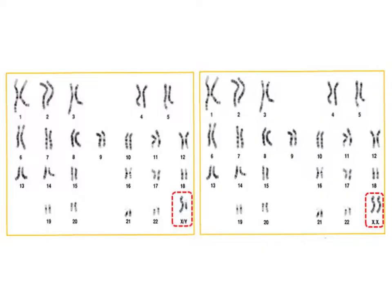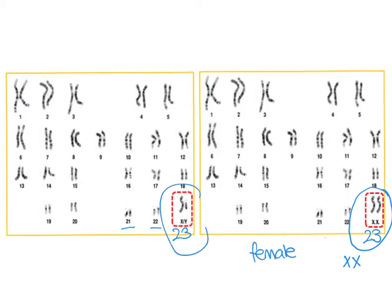Earlier we looked at karyotypes, which are photographs of chromosomes, and we learned that it's the 23rd pair that determines whether someone is male or female. In one case we have two large chromosomes — two X chromosomes — making that person female, whereas a male has one large X chromosome and a smaller Y chromosome.